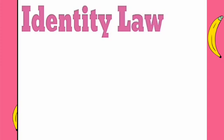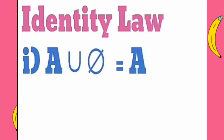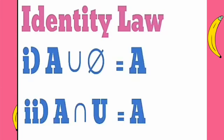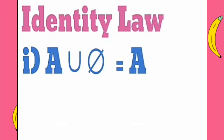Identity law says that A union ∅ is equal to A, and A intersection U is equal to A. Let us prove A union ∅ is equal to A.